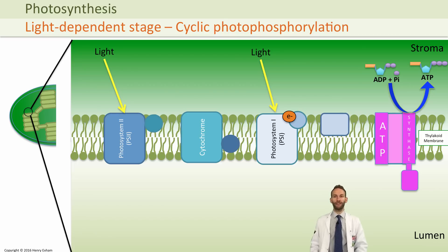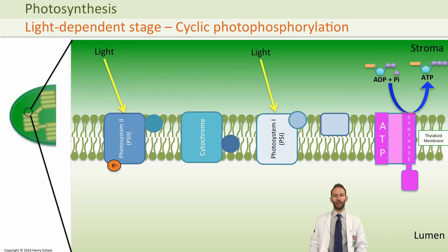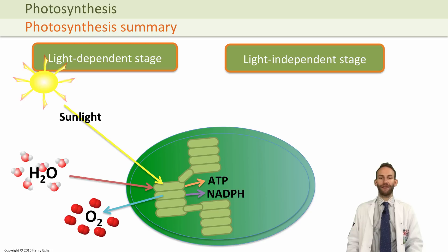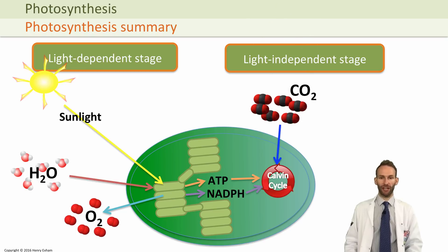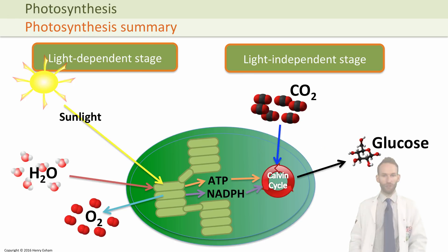In cyclic photophosphorylation we do not need water, because we don't need to replace the electron in photosystem two — the same electron is simply recycled from photosystem one back to photosystem two over and over. No additional NADPH is made, but lots more ATP is generated. Next comes the light-independent stage: that ATP and NADPH enter the Calvin cycle, which takes carbon dioxide and fixes it into organic molecules that eventually make glucose.